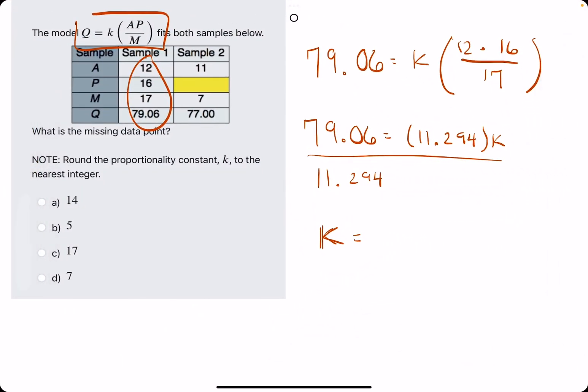They say round K to the nearest integer, so that would be 7 in this case.